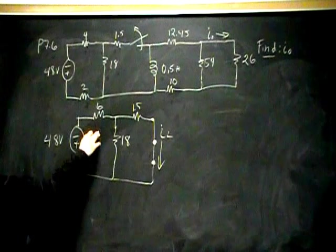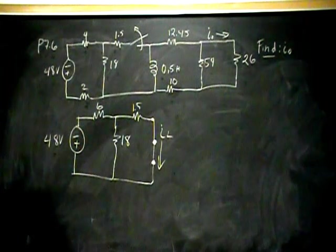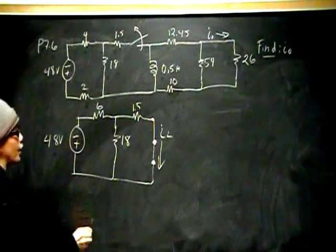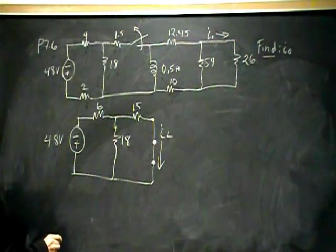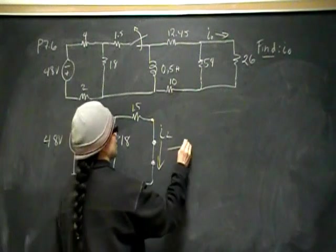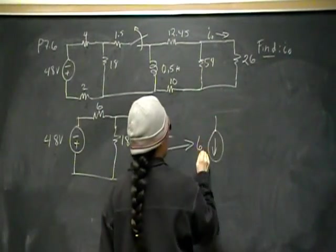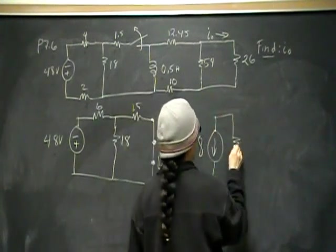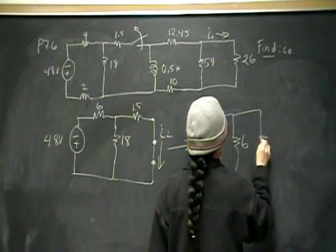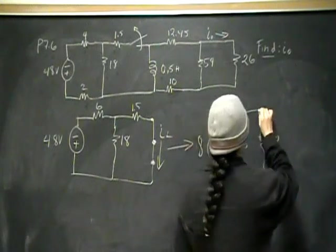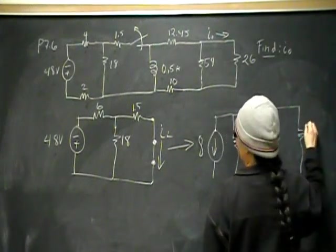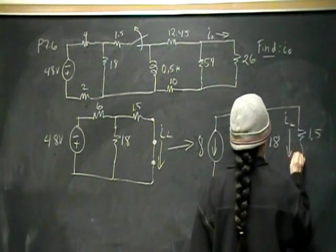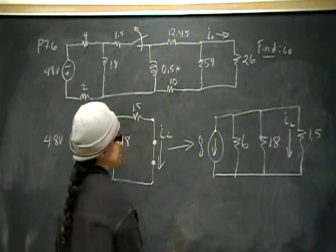48 in series with 6 is the same thing as 8 amps in parallel with 6. So that is going to be the same circuit as this. 8, 6, 18, 1.5. So that is the same thing.